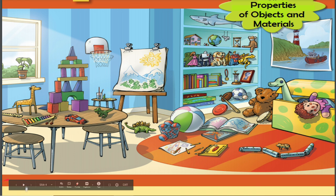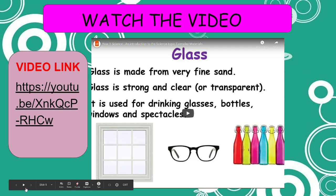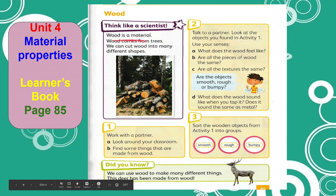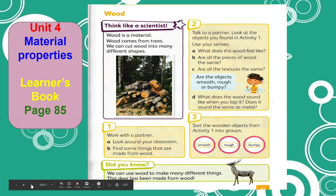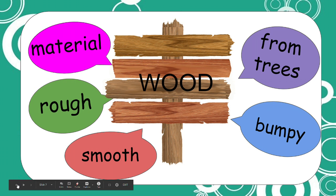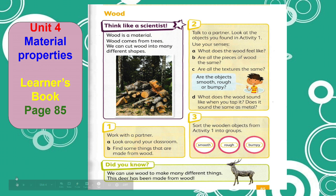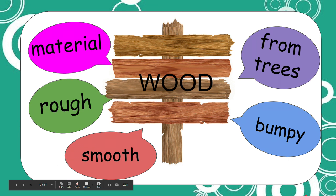What is wood? It is a material that comes from trees. We can cut wood into many different shapes — just like this deer, it has been made from wood. We can use wood to make many different things. And wood has a rough, smooth, and bumpy texture.